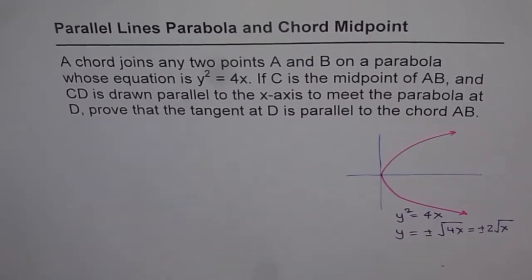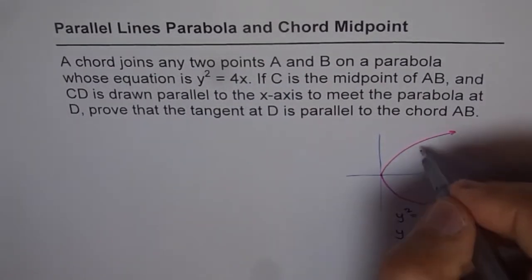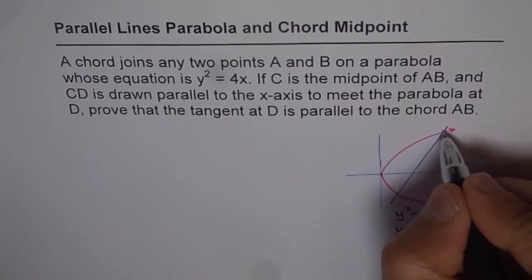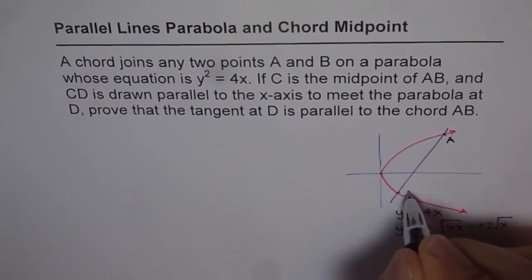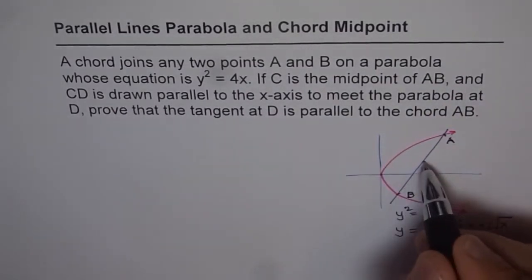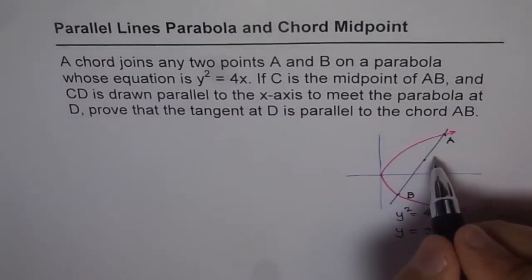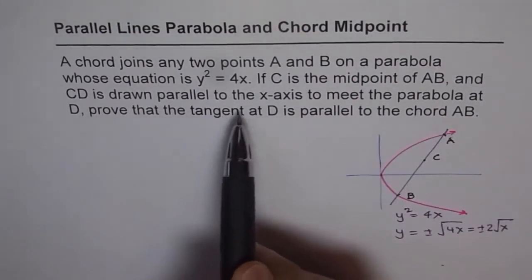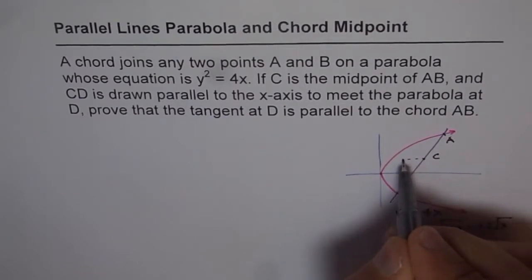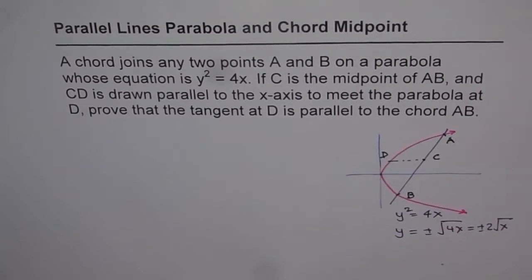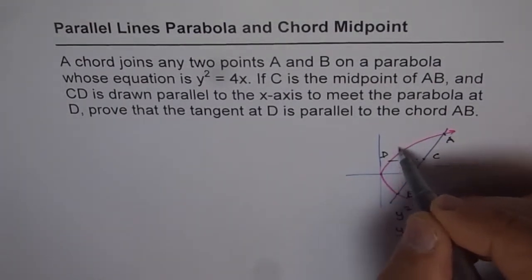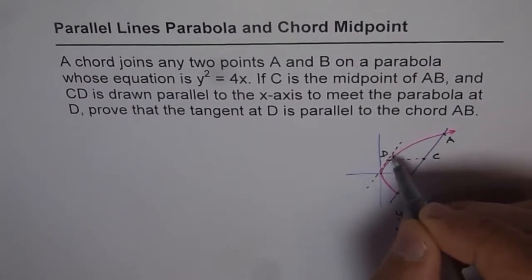A chord joins any two points A and B on the parabola. So let us take a chord here and join it — it has two points where it cuts the graph, and these two points are A and B. If C is the midpoint of AB, and CD is drawn parallel to the x-axis, let us figure out some midpoint — somewhere here could be a midpoint. This point is C for us. CD is drawn parallel to the x-axis to meet the parabola at D, so a parallel line from here meets the parabola at D. We need to prove that the tangent at D is parallel to the chord AB.